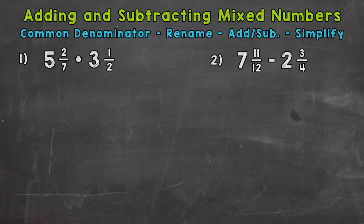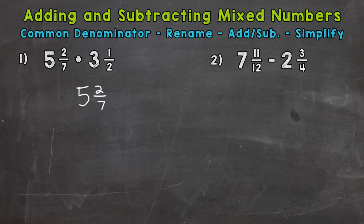Let's jump into number one, where we have 5 and 2 sevenths plus 3 and a half. Before I start, I want to mention that if you're able to add and subtract fractions with unlike denominators, you'll be able to do these types of problems. There's just a couple of extra steps. So let's start with number one. The first thing I like to do is line these up vertically, up and down. So 5 and 2 sevenths plus 3 and a half.